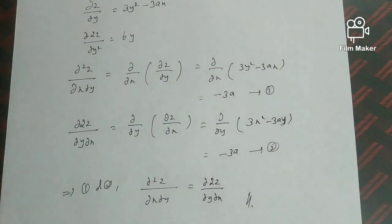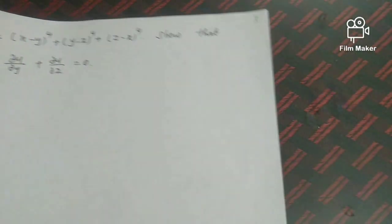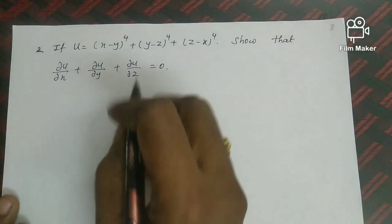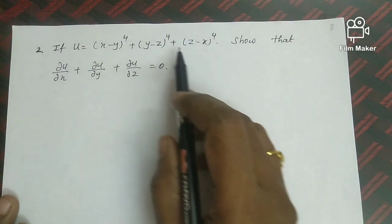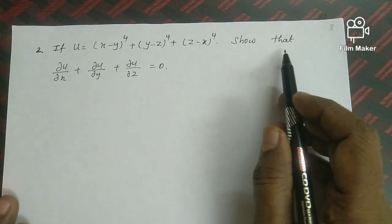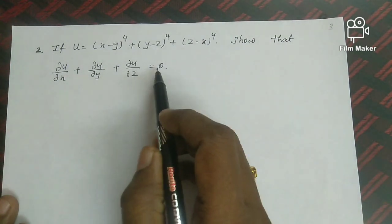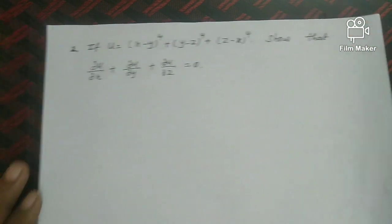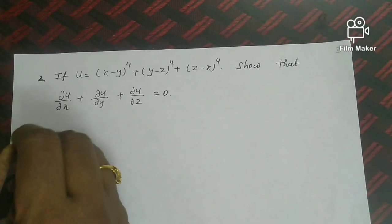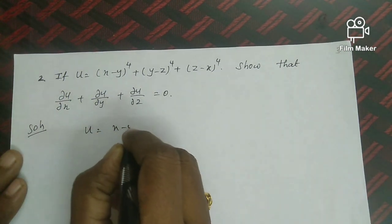Problem 2: If u = (x-y)⁴ + (y-z)⁴ + (z-x)⁴, show that ∂u/∂x + ∂u/∂y + ∂u/∂z = 0. Here u is a function of x, y, z, and we need to find three partial derivatives and add them to get 0.